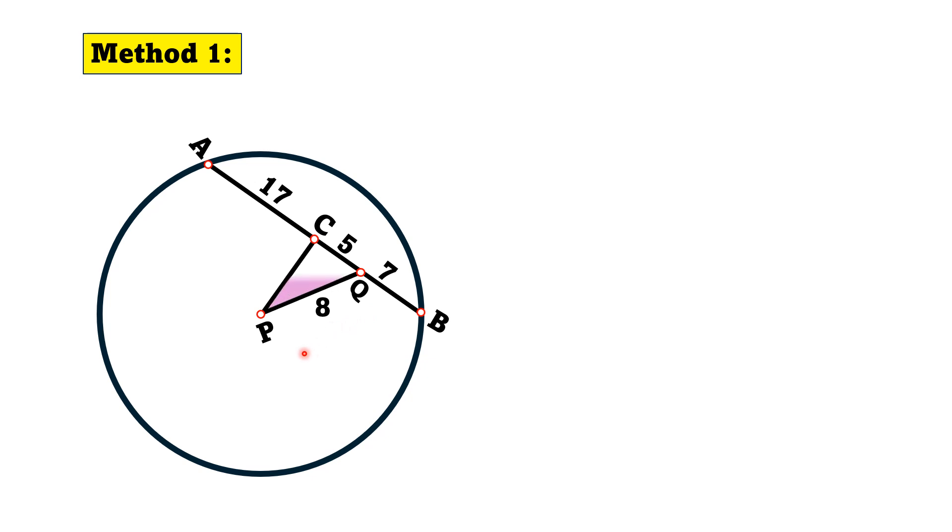Now we have a right triangle PCQ and from this right triangle we can find PC. PC square is equal to PQ square minus QC square, which is equal to 8 square minus 5 square, and hence PC square is equal to 39, and from here PC is equal to square root of 39.